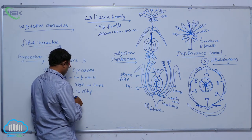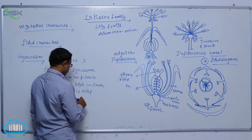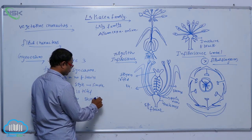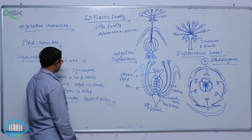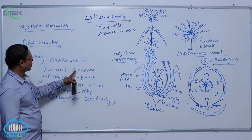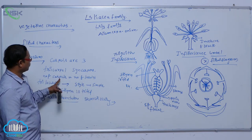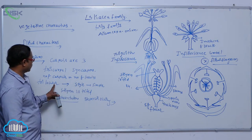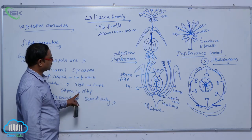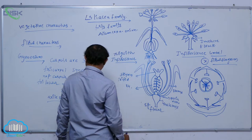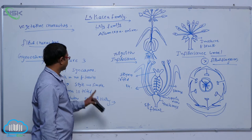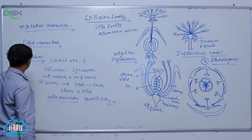In the ovary, it is axial placentation — ovules are connected to the center, that is known as axial placentation. Trilocular means it is a superior ovary. So style is simple and stigma is trifid. Axial placentation, superior ovary — that is the gynoecium part.